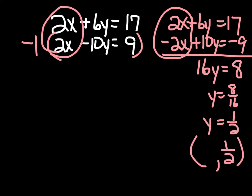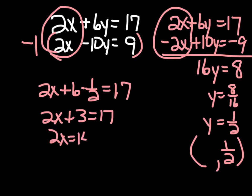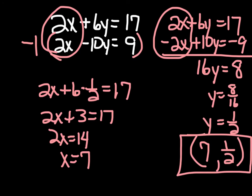Now we're going to substitute y equals one half back into either equation. We have 2x plus 6 times one half equals 17, so 2x plus 3 equals 17. We subtract 3 from both sides to get 2x equals 14, divide by 2, and x equals 7. So the solution to this system is (7, one half), and we solved it by eliminating the x's.